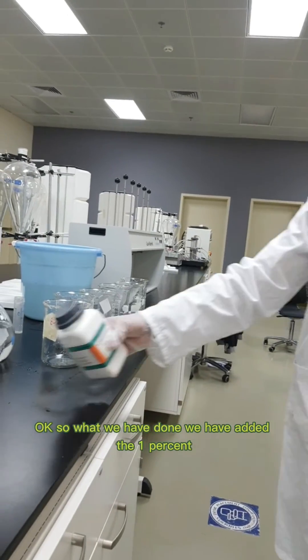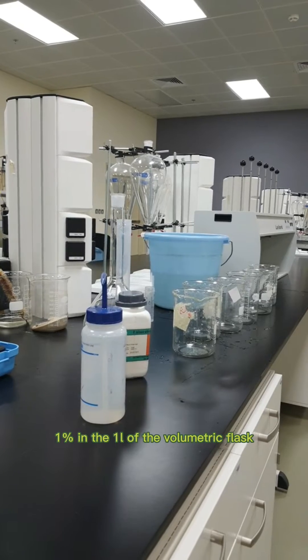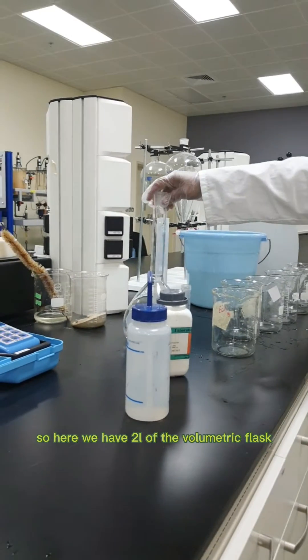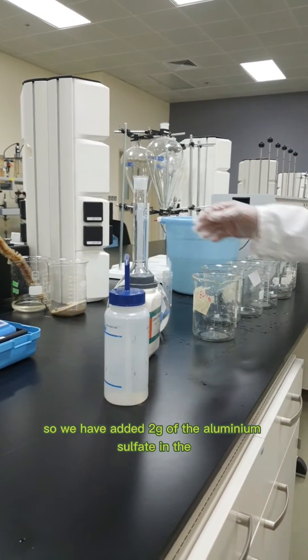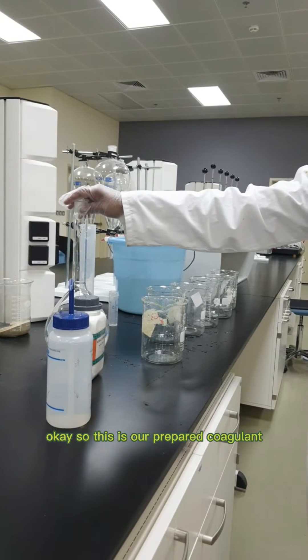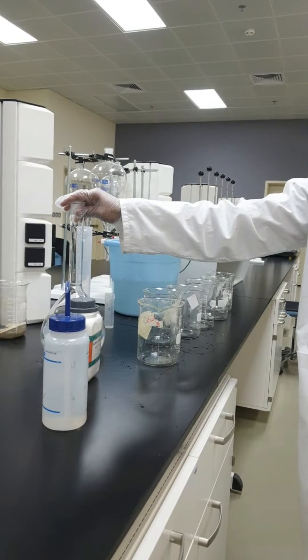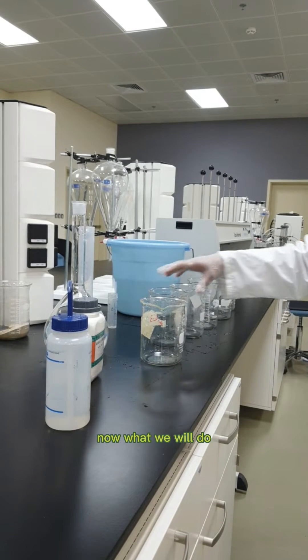We have added 1% aluminum sulfate in a volumetric flask. Here we have two liters of the volumetric flask, so we have added two grams of aluminum sulfate in the distilled water. This is our prepared coagulant.